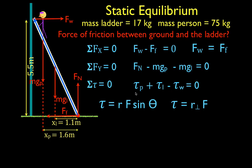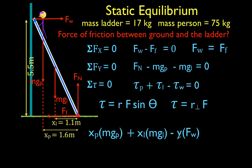I'm going to take this equation and apply it to the three torques: the torque from the person, the torque from the ladder, and the torque from the wall. The lever arm for the person times the force of the person, plus the lever arm for the ladder times the force from the ladder, minus the lever arm for the wall force times the wall force, all equal to zero. For the wall force, the wall is perpendicular to the force, so the lever arm is 5.5 meters.